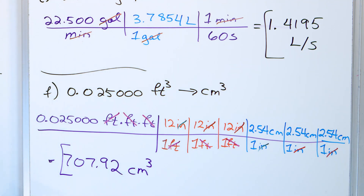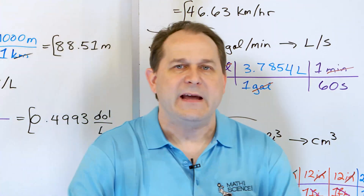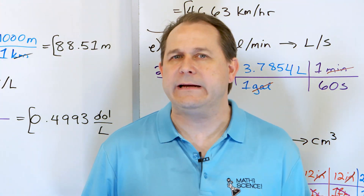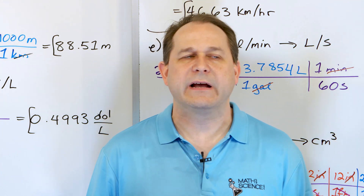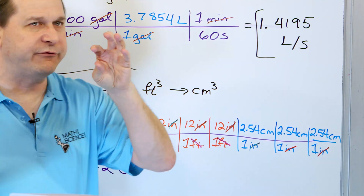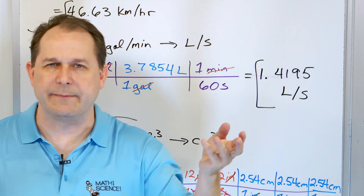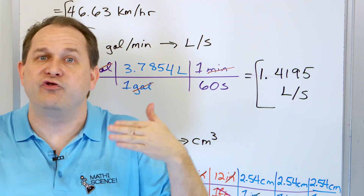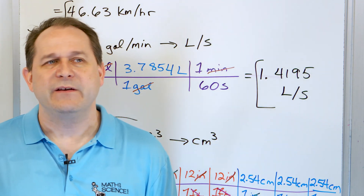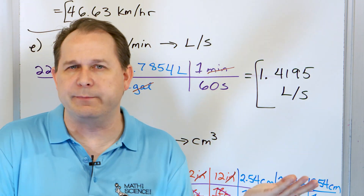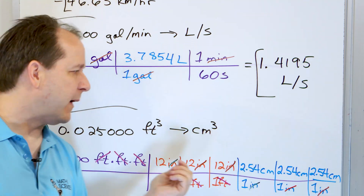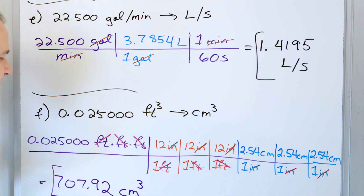This is what I mean by dimensional analysis — it's a very powerful way to ensure you never make mistakes converting units. A lot of students write cubic feet and then just convert feet to inches once, but they forget there are three feet multiplied together. So you can't do the conversion just once — you have to expand it like this, otherwise you get the completely wrong answer.